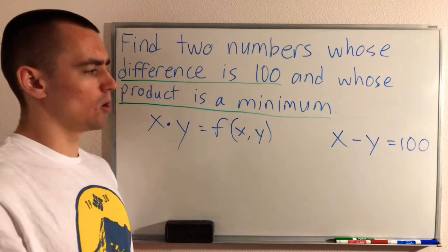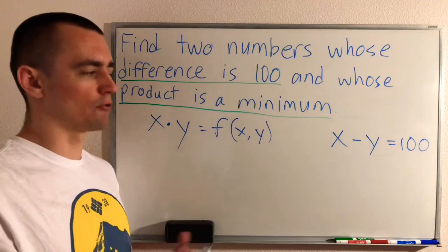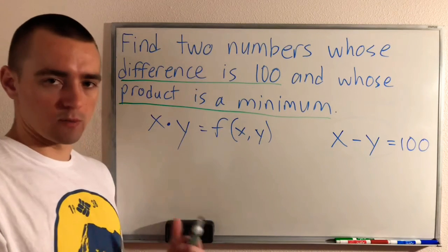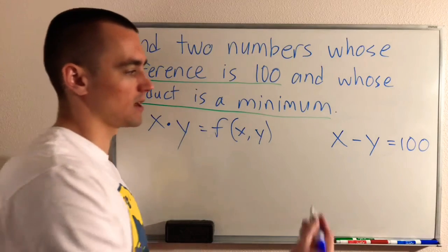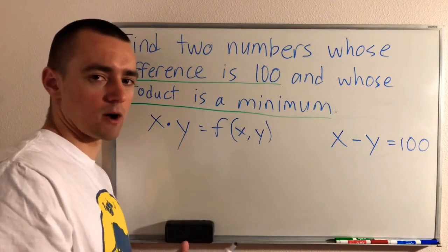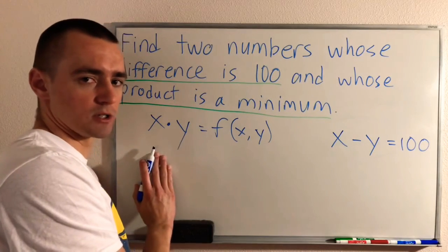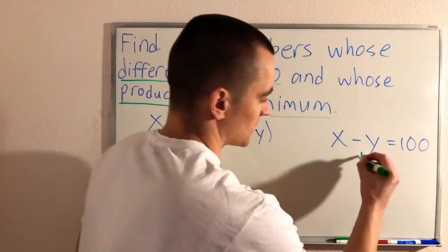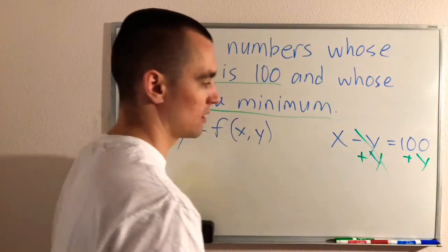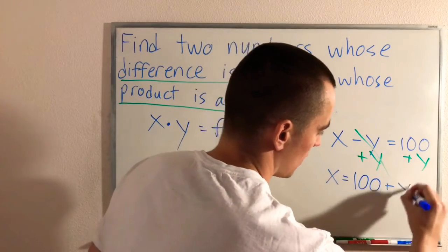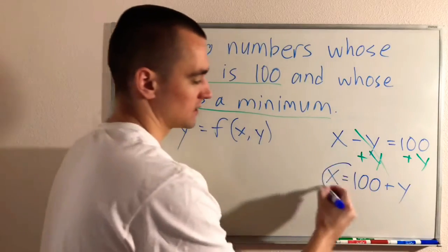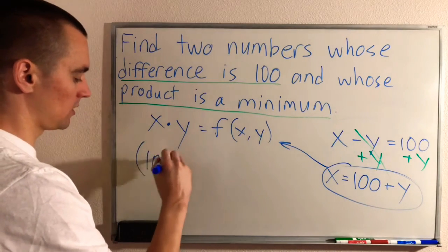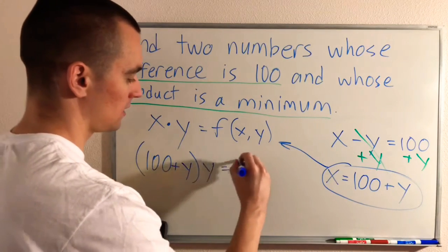What we want to do is rearrange our restriction to express one variable in terms of the other, then substitute into our multi-variable equation to get a single-variable function. If we add y to both sides of x minus y = 100, we get x equals 100 plus y. Now we plug this into our product equation: (100 plus y) times y equals f(y).